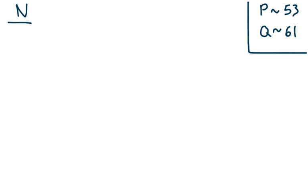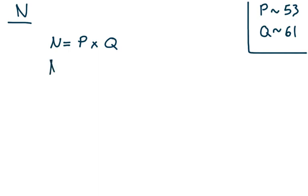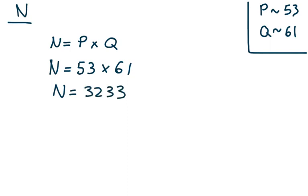Now we're going to talk about the value of N, which is simply defined as the product of P times Q. So just those two prime numbers we picked — their product is the value of N. In our case, P is 53 and Q is 61, so N is equal to 53 times 61, which is 3,233.